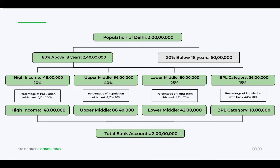Then I'll apply the income filter. Is my approach correct till now? Yes, this sounds fair — you can go ahead. So I'll apply the income filter, considering high income to be 20%, upper middle to be 40%, lower middle 25%, and the BPL category to be 15%. I'll consider the percentage with bank accounts to be 100% for high income, 90% for upper middle, 70% for lower middle, and 50% for BPL. The numbers come out to be: high income 48 lakhs, upper middle 86 lakhs 40 thousand, lower middle 42 lakhs, and BPL 18 lakhs.